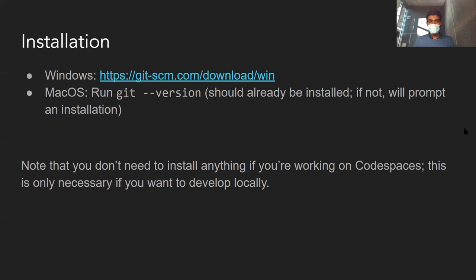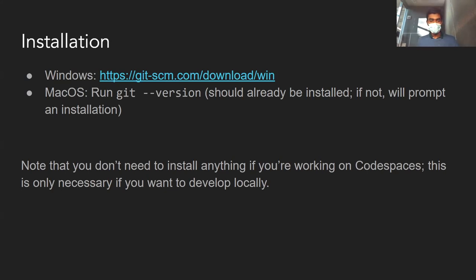A quick note on installation. If you're using Codespaces like you do for your CS50 problem sets, then you don't actually have to install anything — Git should come pre-installed. If you do want to develop locally, you can install it using the provided link on Windows. On macOS, it should probably already be installed, but if not, you can run git --version and it should prompt an installation. These links are in the slides, so you can download the slides from the CS50 website.